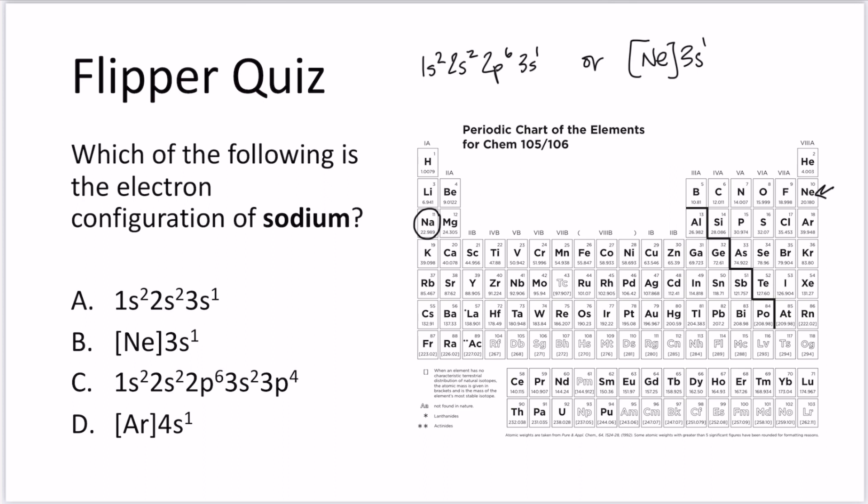So if we look at our answer choices here, choice A is incorrect for two reasons. One is we should notice that they skipped the 2p, but the other, if we actually count up how many electrons are here, there's only five electrons. So what's written here couldn't even be an excited state configuration for sodium. It has the wrong number of electrons.